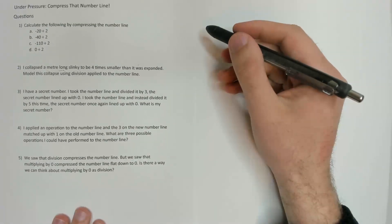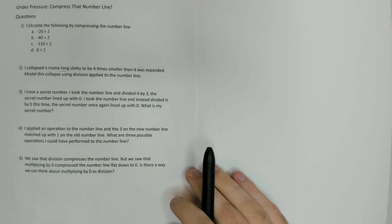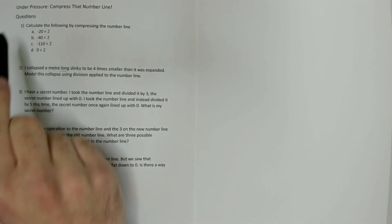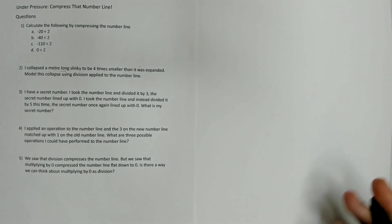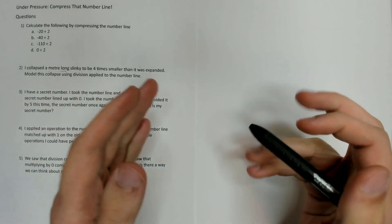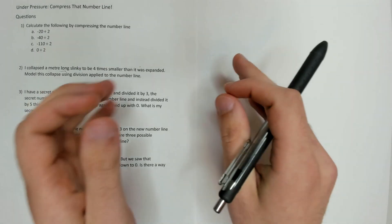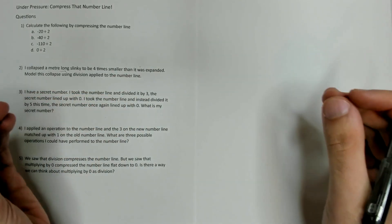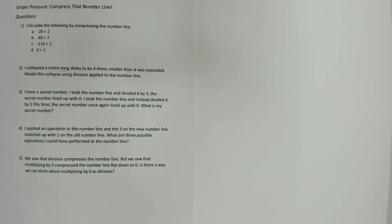Hello everyone and welcome back to an exciting episode of BOMAP. Sorry the video is a little later than I was hoping for, but such is life. Today we're going to be looking at 'Under Pressure: Compress That Number Line', but we're going to be doing some practice for it. Just as a recap of what happened last time, we looked at how to compress the number line, which came about by applying the division operation to the entire number line. Division shrunk the size in between ticks and compressed it down, just like multiplication expanded the size between ticks. So we're going to get familiar with this concept by doing some practice questions.